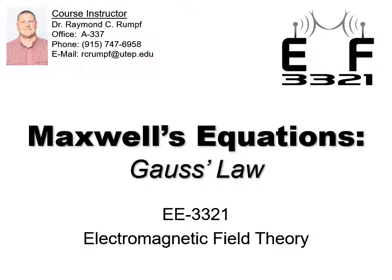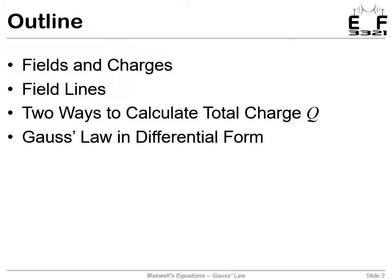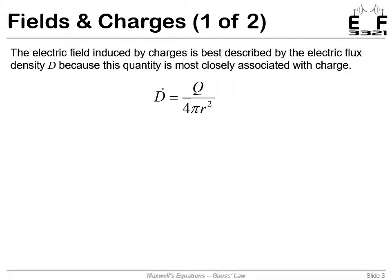Maxwell's Equations, Gauss's Law. It's well known that if we have a charge, positive or negative, we will get electric flux emerging from that or converging to it. In fact, later we'll study this equation describing the electric flux density D around the point charge Q.